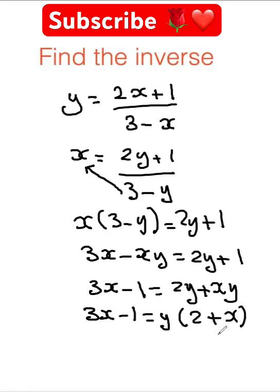Now I'm going to divide both sides by 2 plus x, so I'm going to get 3x minus 1 over 2 plus x equals y, and I'm just going to write the y as f to the negative 1 of x, indicating the inverse.